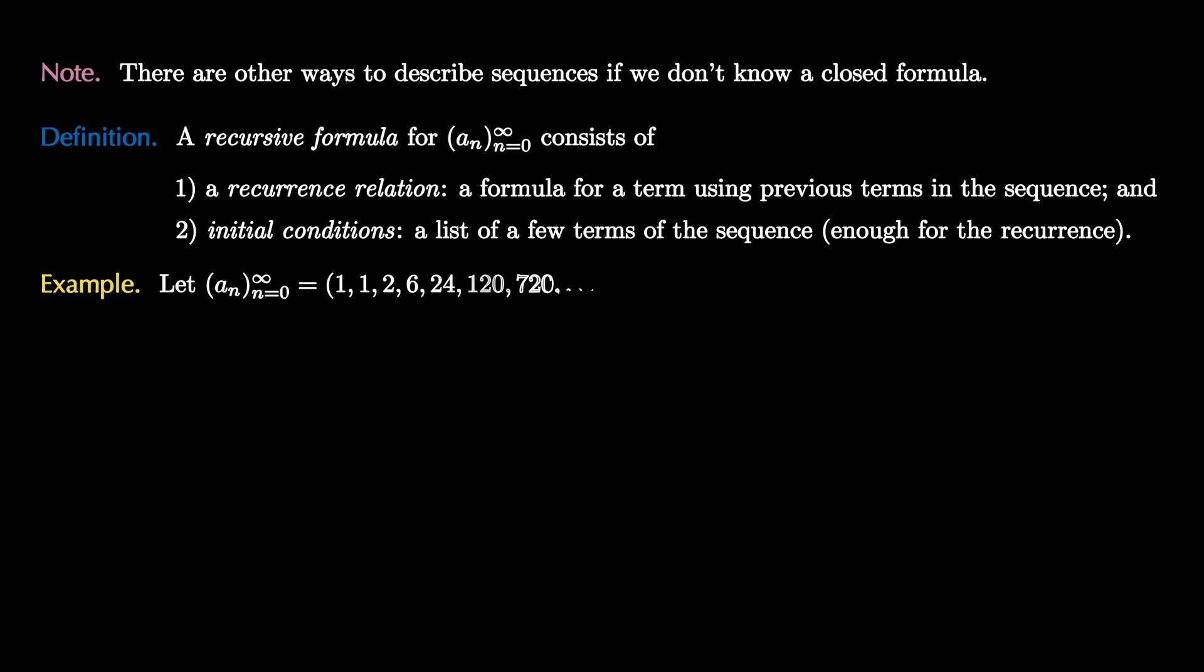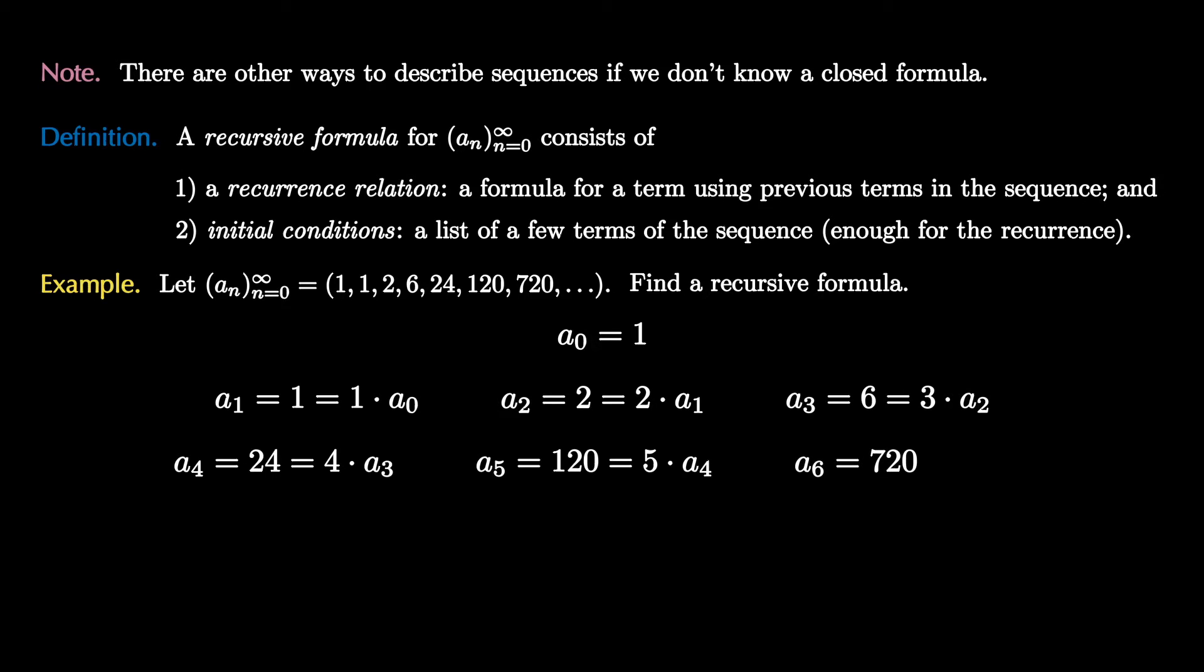Let's see an example. Suppose our sequence is the collection of numbers 1, 1, 2, 6, 24, 120, 720. Let's try to find a recursive formula. The first thing we can notice is that a₀ is 1, and a₁ is 1, which happens to be 1 times a₀. a₂ is 2, which happens to be 2 times a₁. Next we see a₃ is 6, which is 3 times a₂. After that we see a₄ is 24, which happens to be 4 times a₃. And a₅ is 120, which is 5 times a₄. Finally we see a₆, which is 720, is 6 times a₅.